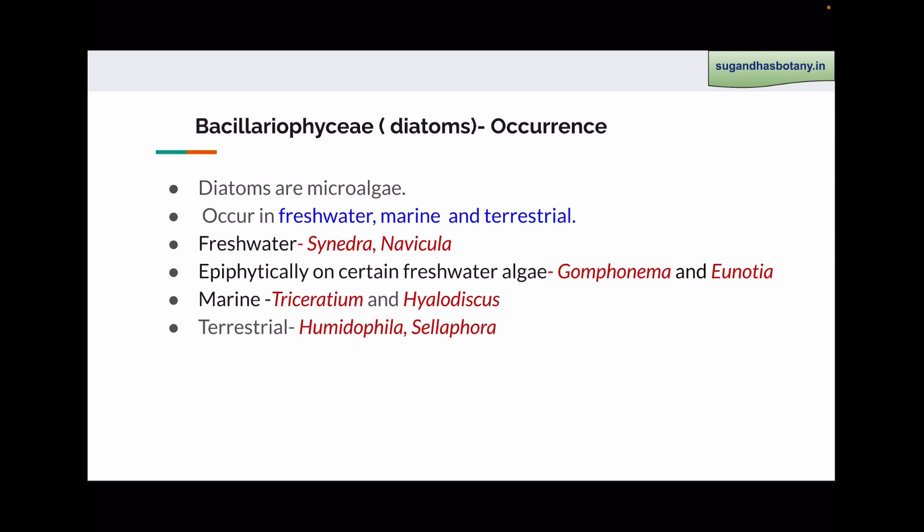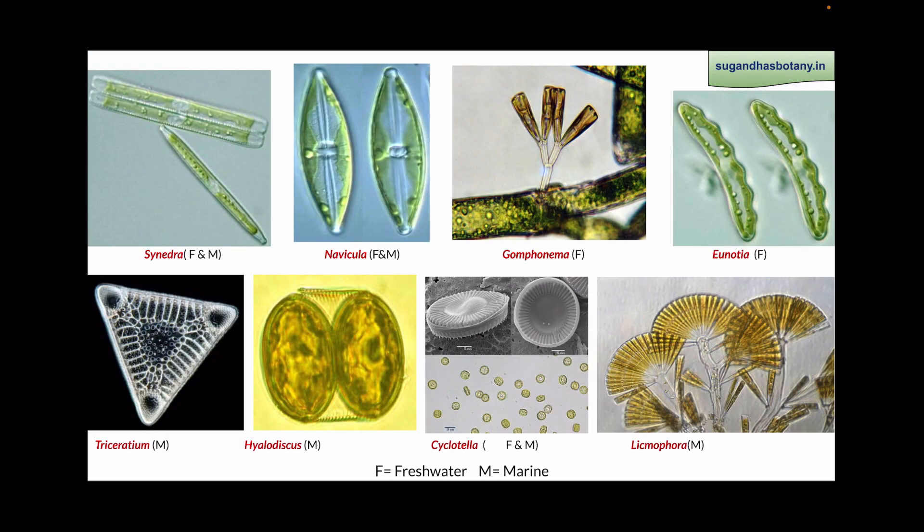Cynedra and Navicula are fresh water forms. Gonphonema and Eunotia grow epiphytically on other fresh water aquatic algae. Triceratium and Hylodiscus are marine diatoms. Humidophila and Cellophora are found in terrestrial habitats. This is the picture of some diatoms such as Cynedra, Navicula, Gonphonema, Eunotia, Triceratium, Hylodiscus, Cyclotella, and Lichmophora.